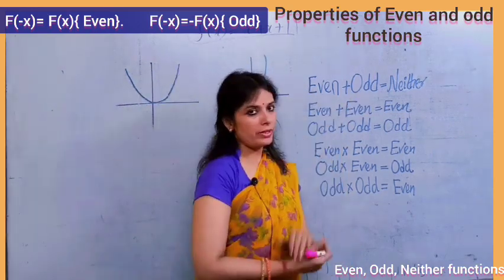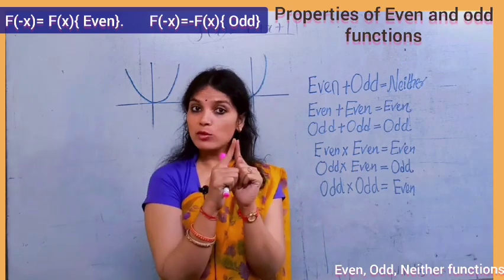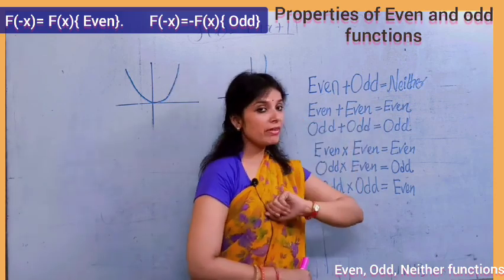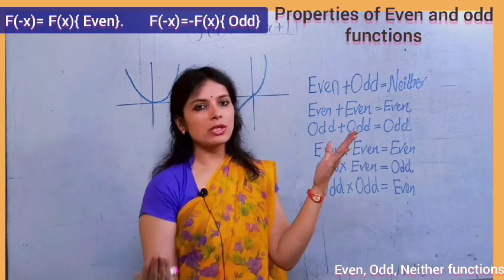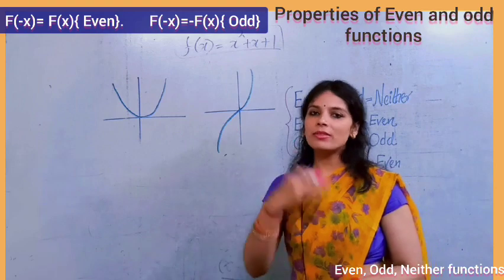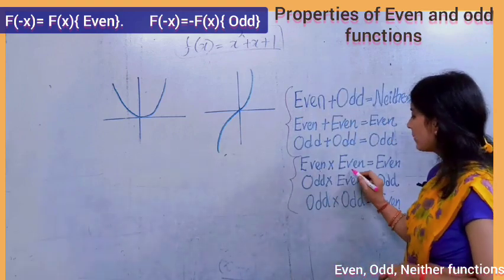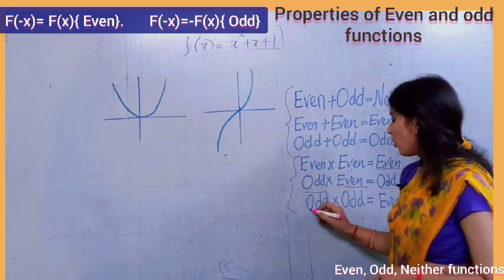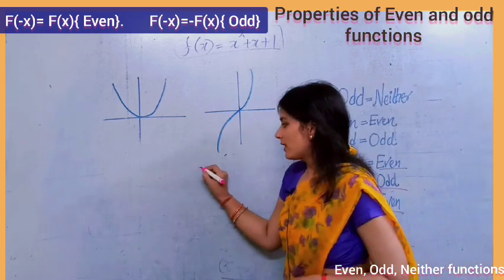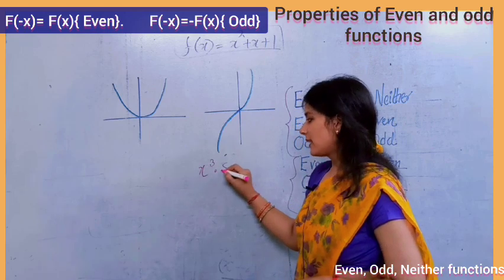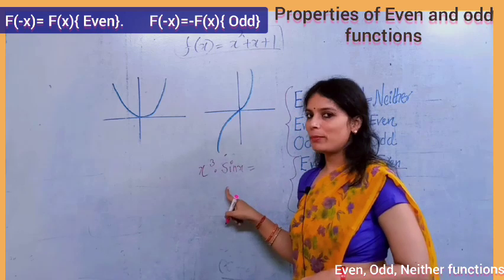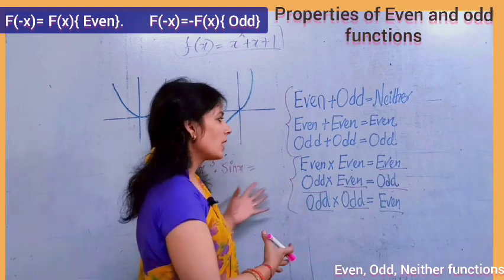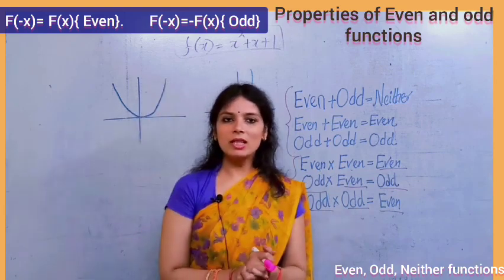Now let's look at some properties of even and odd functions. Even function plus odd function gives a neither function. Even function plus even function is again an even function — for example, x² + x⁴ gives another even function. For products: even times even is even; odd times even is odd; odd times odd is even. For example, x³ multiplied by sin(x) — both odd functions — gives an even function. This is very useful in special integration.